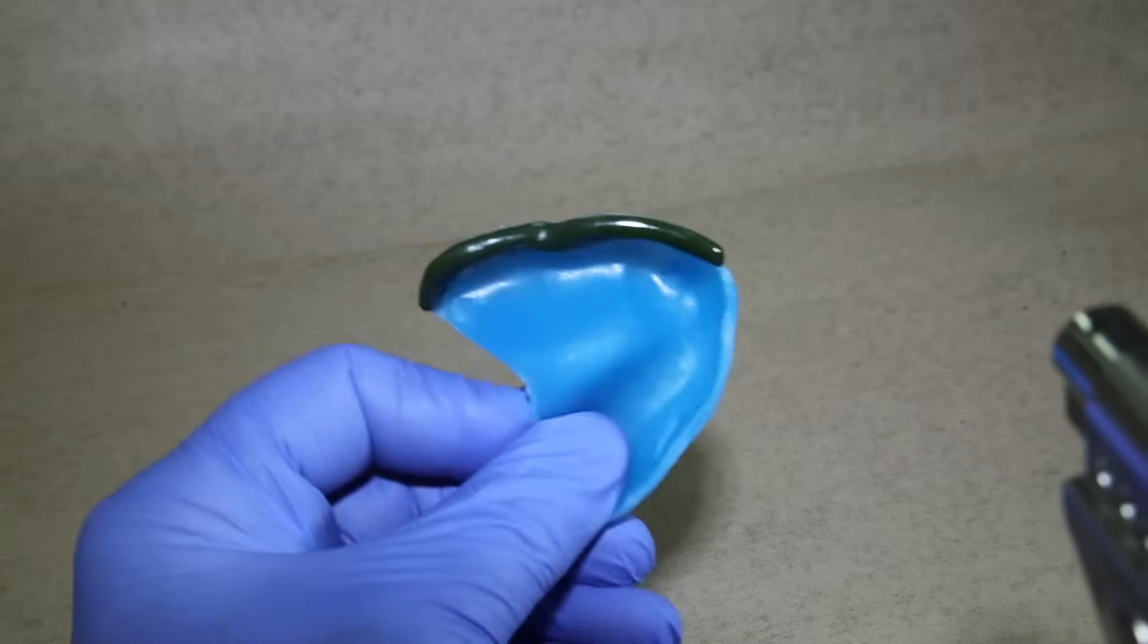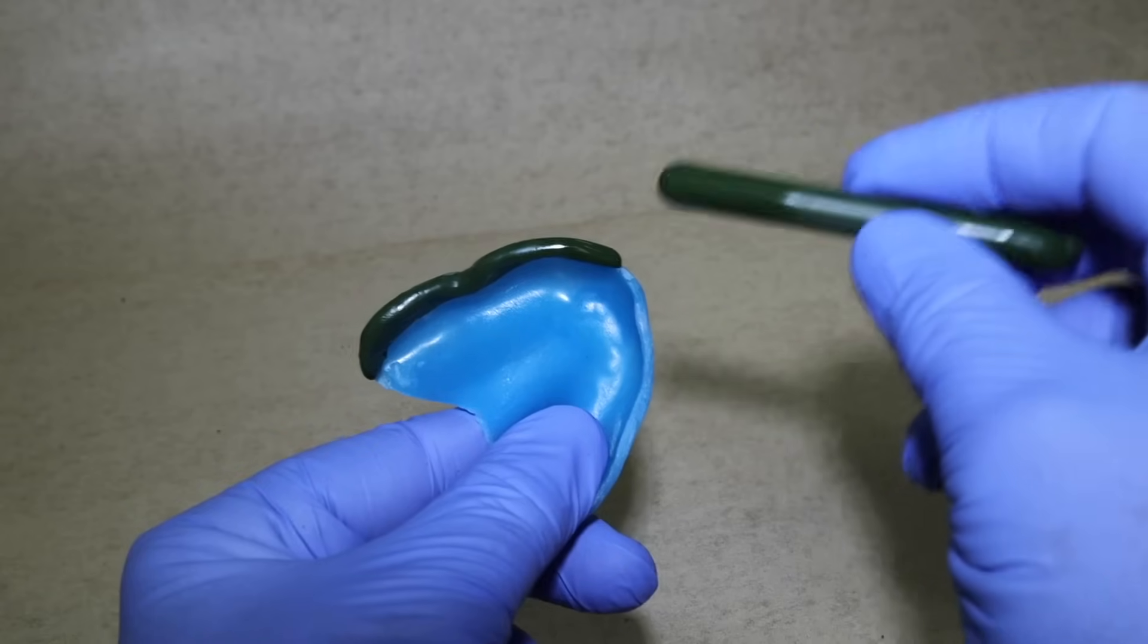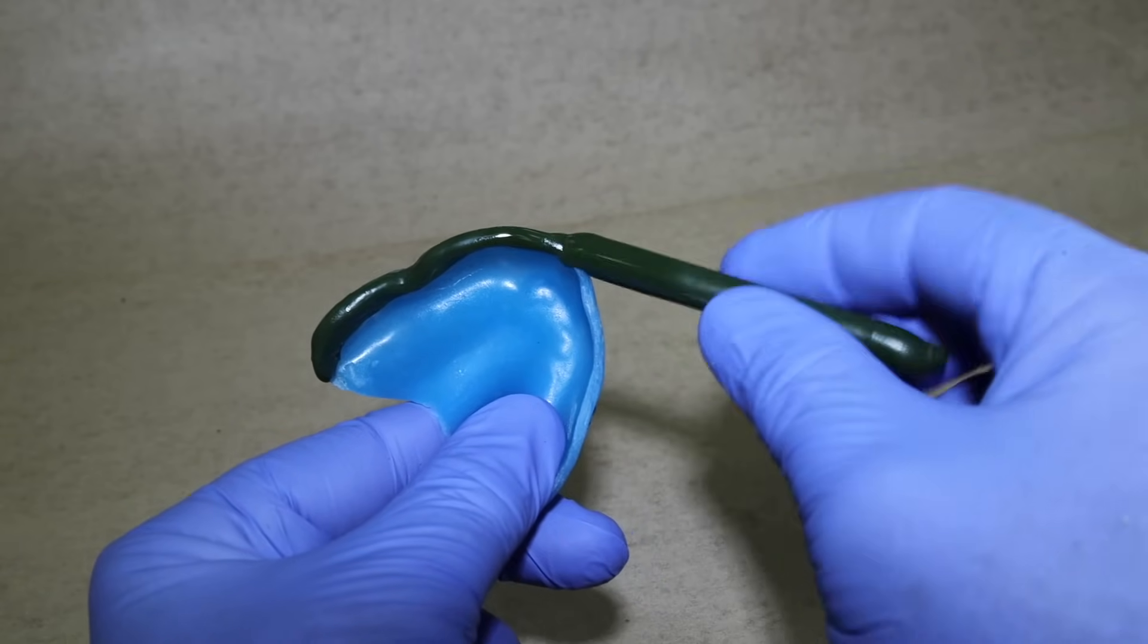When adding compound, make sure that the junctions between the molded segments are flamed to blend and eliminate any seam lines.